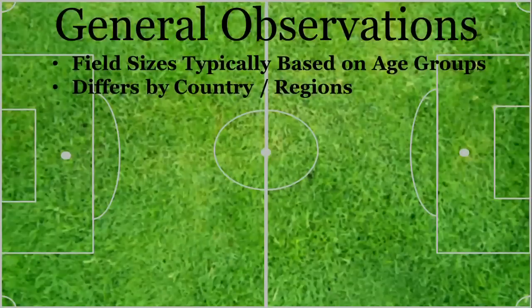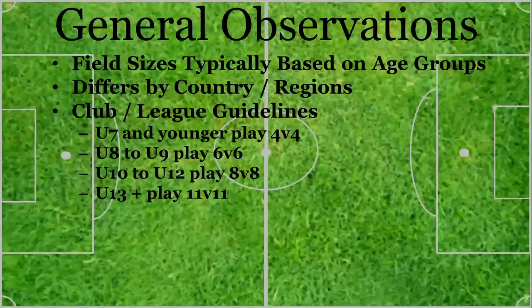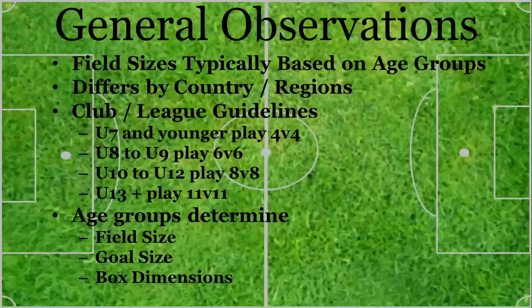Field sizes typically follow age groups. The smaller the kid, the smaller the field. In our club, U7 and younger play a 4v4 game, U8 to U9 play 6v6, U10 to U12 play 8v8, and the older ones play on a full-size field.